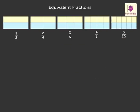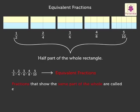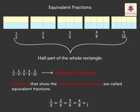Here, half, two-fourths, three-sixths, four-eighth and five-tenth all represent half part of the whole rectangle. These fractions are called Equivalent Fractions. Thus, we say two or more fractions that show the same part of the whole are called Equivalent Fractions. That is, half is equal to two-fourths is equal to three-sixths is equal to four-eighth is equal to five-tenth.